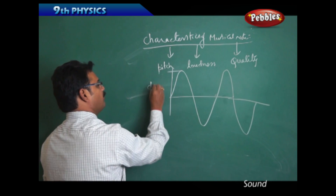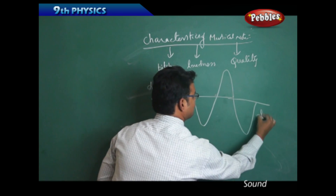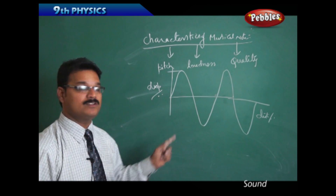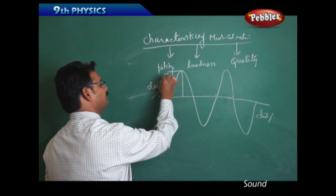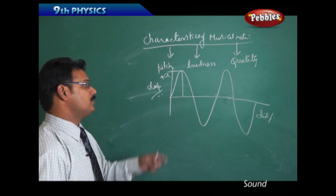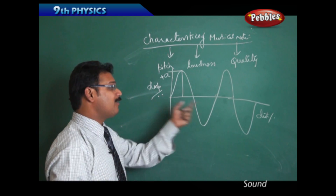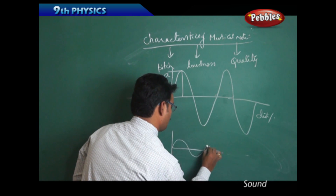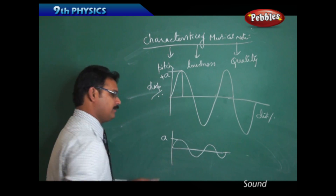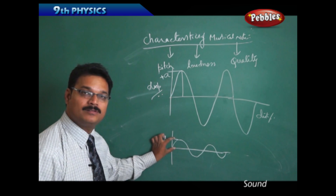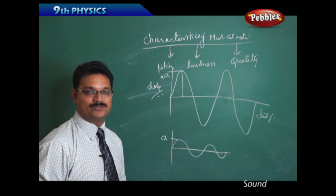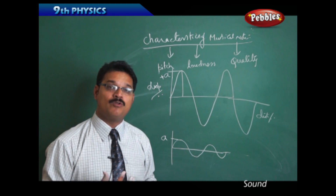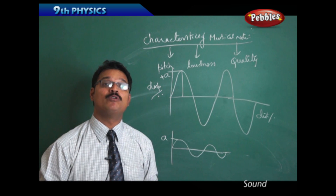On the y-axis I have taken displacement, and on the x-axis I have taken distance. Louder sound is represented by more amplitude — larger amplitude. So waves having larger amplitude are called louder sound. What is soft sound? Soft sound means the amplitude is very small — soft sound has smaller amplitude. Louder sound has larger amplitude.